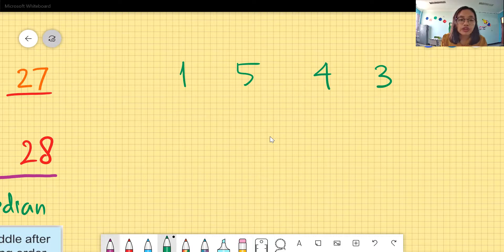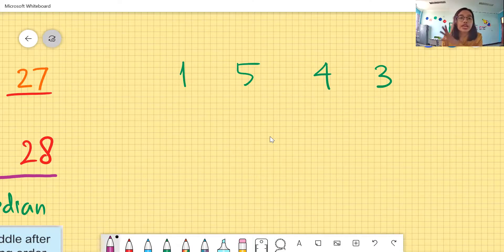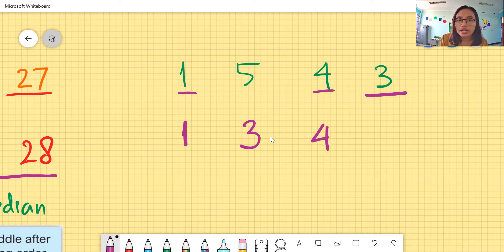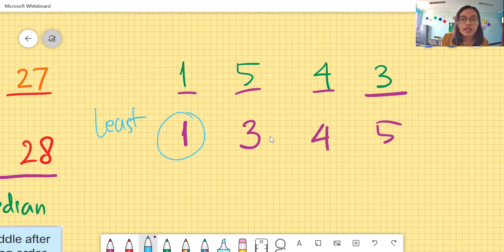Of course, we have to arrange from the least to the greatest. Atau sebaliknya ya. Kita urutkan. Let's start from the least. One. And then continue number three. And then number four. And the last is number five. So we have one is the least and five is the greatest.